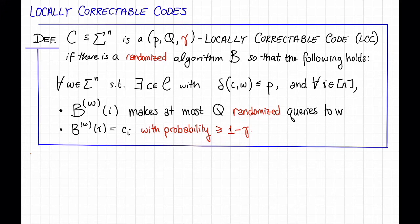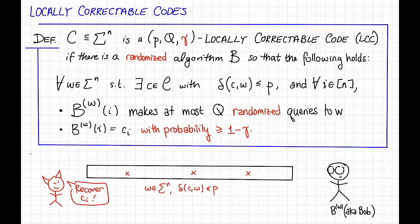So now the picture looks like this. We have the same setup as before, but now Bob is allowed to flip some coins before making his queries.